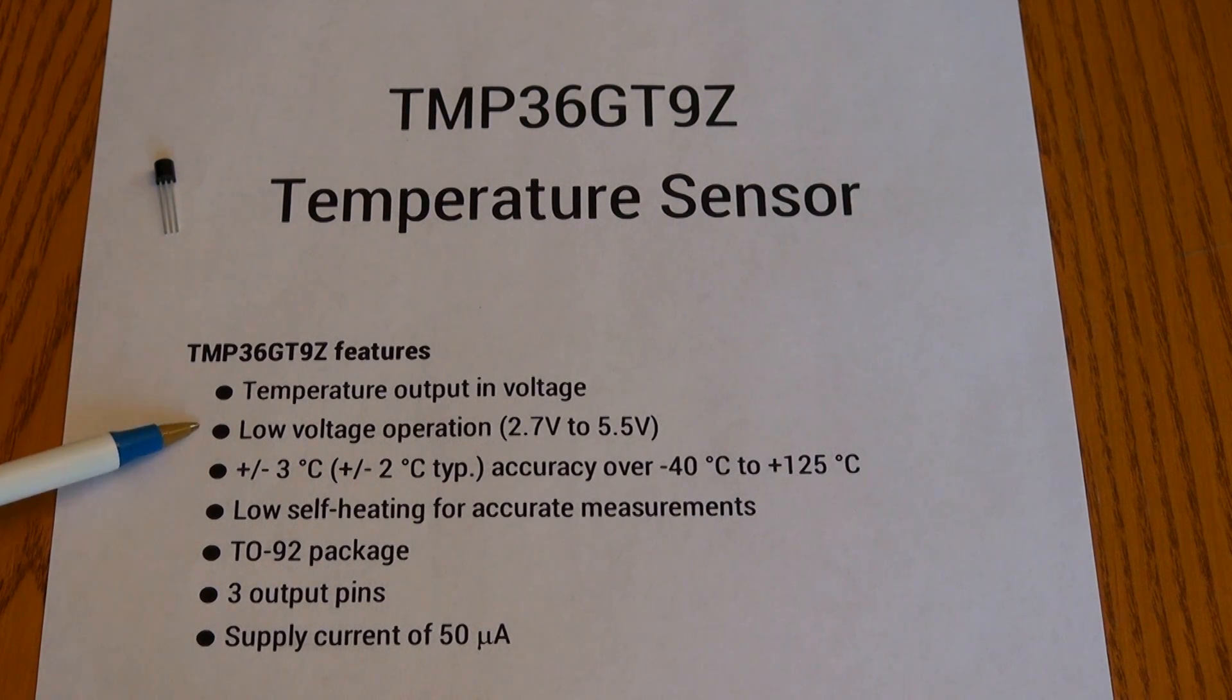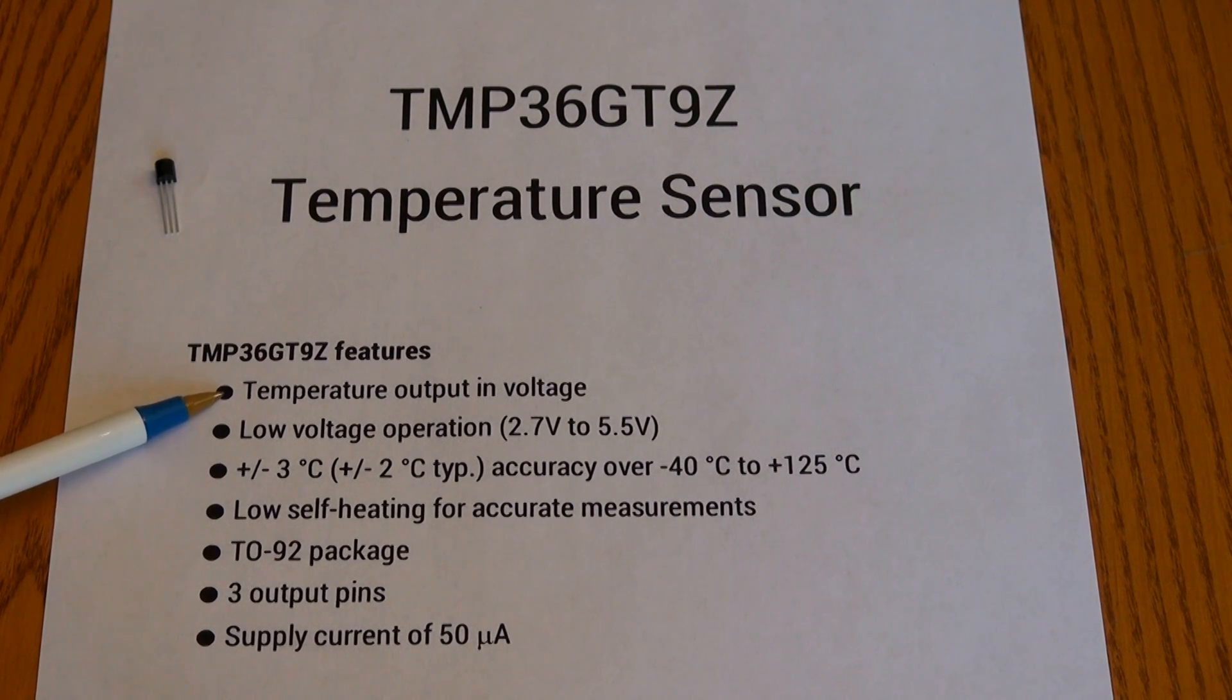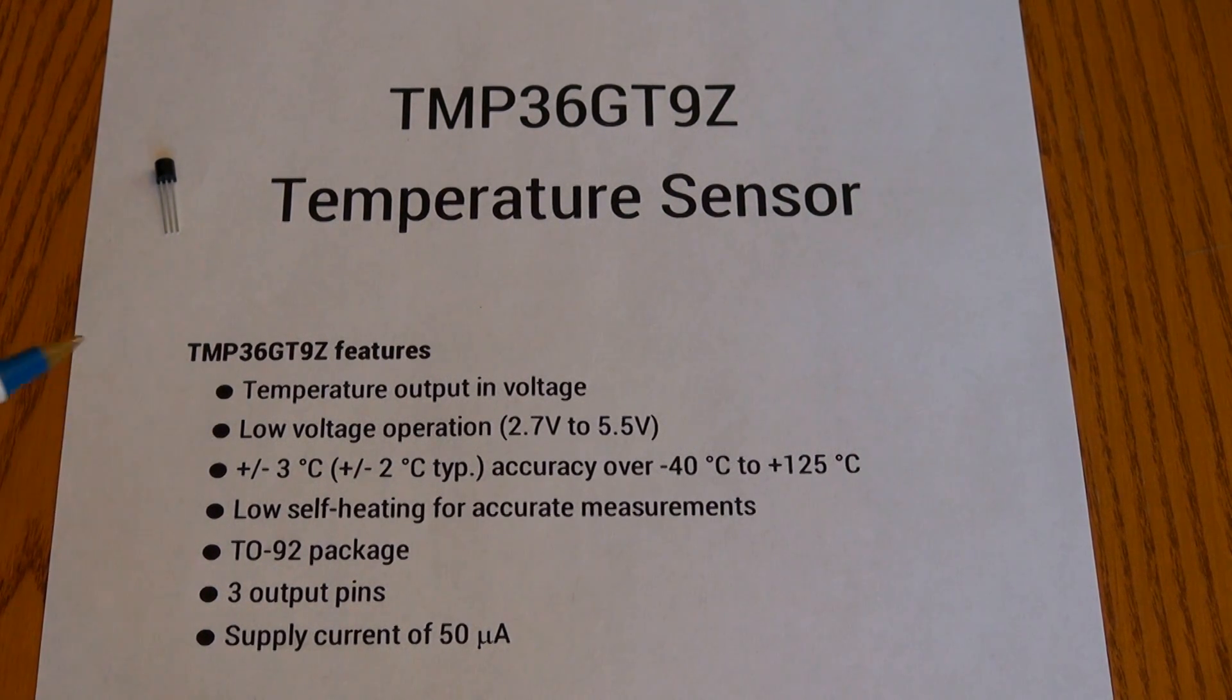Getting back to the features, the first two I already kind of mentioned. The temperature output is a voltage analog output, so you will need to convert it in order to understand it or read it in temperature in degrees Celsius. And I will include the equation later on. I also mentioned it has low voltage operation of 2.7 volts to 5.5 volts, which is perfect for the Raspberry Pi and Arduino because they both offer voltages between that range.